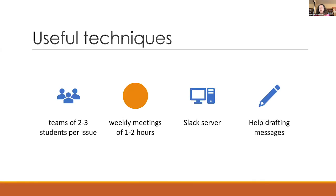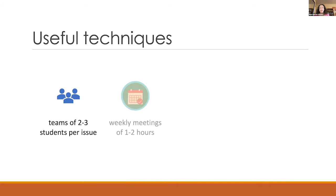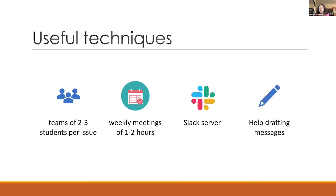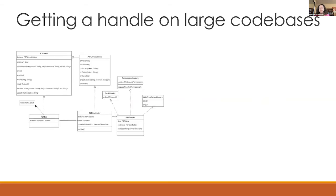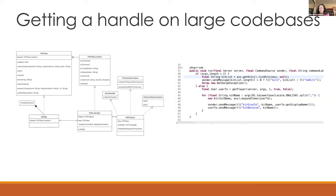Some useful techniques for running the class: have teams of two to three students per issue, with everyone in the class working on the same code base. Hold weekly meetings of one to two hours so you can make sure students stay on track and help them with anything they get stuck on. Maintain a Slack server where students can ask you and each other questions and share information, and always be willing to help students draft messages. A big challenge is getting a handle on large code bases. Creating static UML class diagrams can help, though what's most helpful is having students step through code in a debugger.